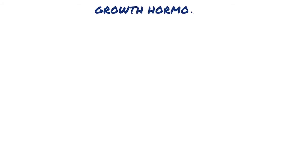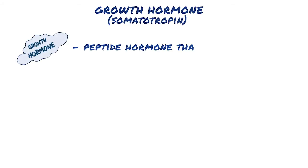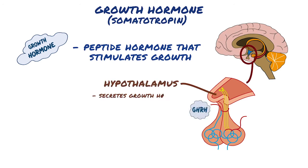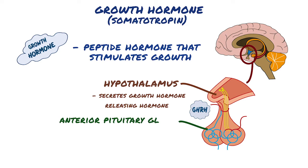Growth hormone, or somatotropin, is a peptide hormone that stimulates growth. Secretion of the growth hormone depends on the hypothalamic pituitary axis. The hypothalamus, which is a part of the brain, secretes growth hormone-releasing hormone into the hypophysial portal system, which is a network of capillaries linking the hypothalamus to the anterior, or front part, of the pituitary gland.